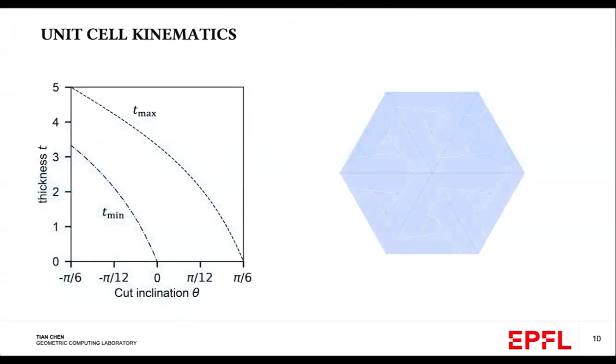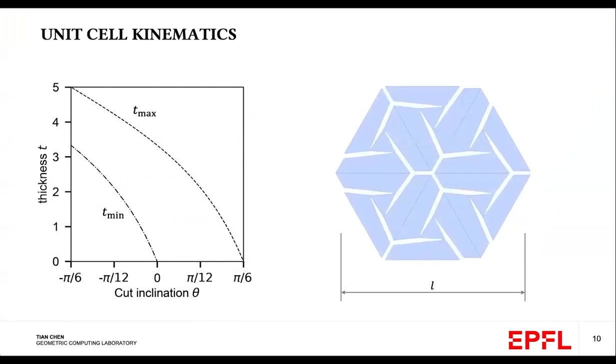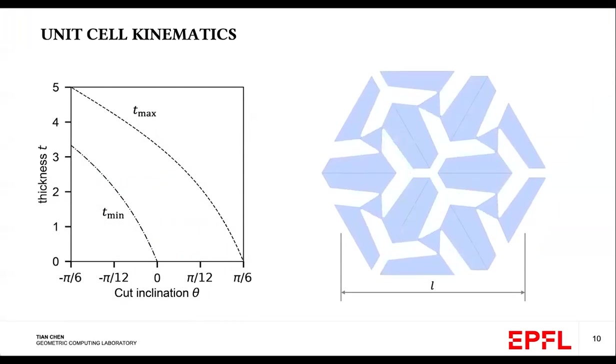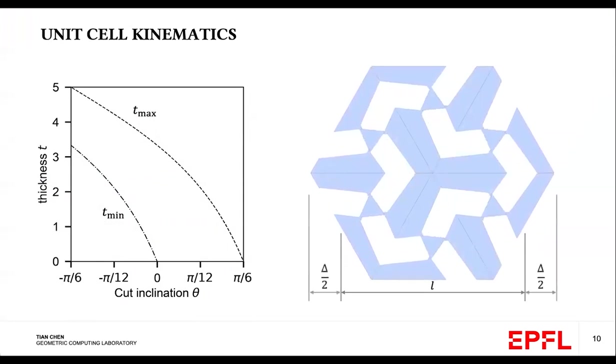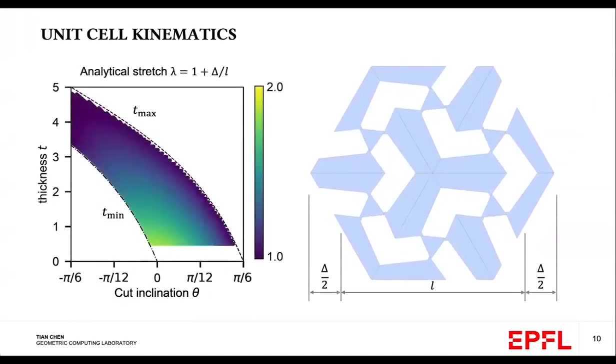We aim to understand the kinematics of the opening of such a unit cell. We first analytically derive the minimum and the maximum thickness for a given theta. Note that outside of these bounds, the unit cell is either physically not realizable or not bistable. Now if we assume the width of the unit cell is L, and then by rotating the inner triangles, we can obtain the open shape. And with this open shape, we can quantify an analytical stretch, which is 1 plus delta over L. And by plotting this contour map, we note that the stretch ranges from 1 to 2.